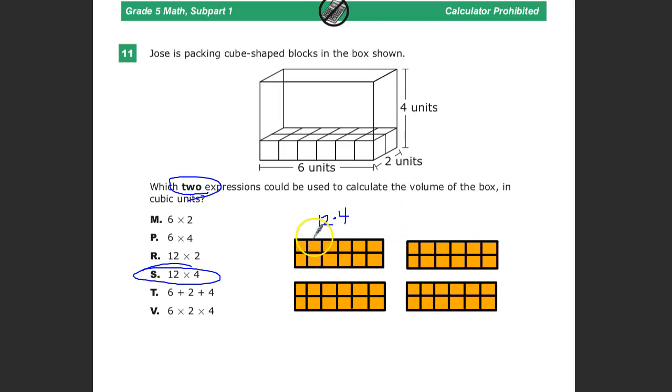Well, if I do six times two to give me the 12, so this is one, two, three, four, five, six. And there's two of those rows. So this would be, each individual one of these would be six times two. And then there's four total. I would just do six times two times four. So also, V is a correct answer that I could have chosen here.